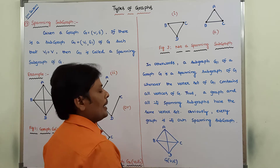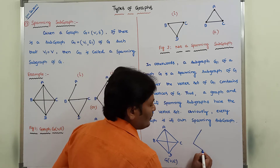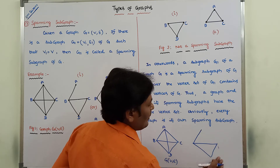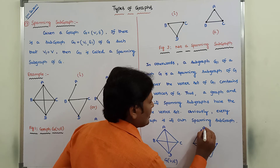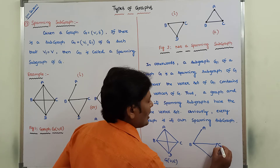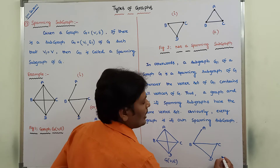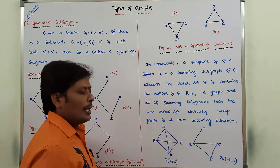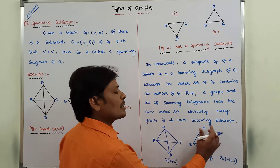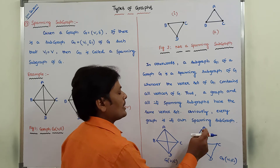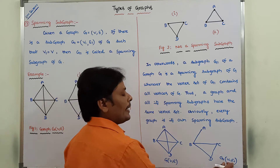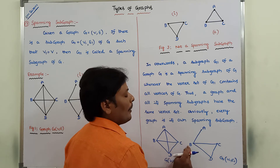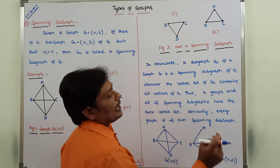Now I am taking another graph. This graph has vertices A, B, C, and D. This graph is denoted by G1 of V1 comma E1. V1 is nothing but the set of vertices present in graph G1. The edge set of G1 includes: A comma B, B comma D, C comma D, and D comma C.